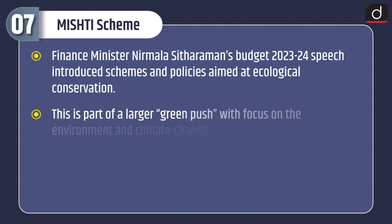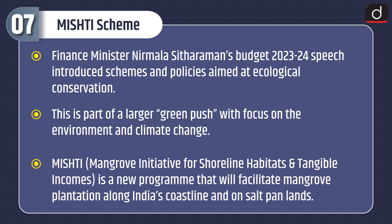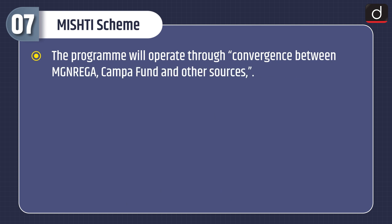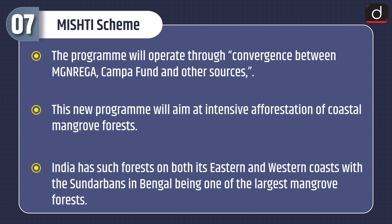Lastly, let's discuss about MISTI scheme. Finance Minister Nirmala Sitharaman's budget 2023-24 speech introduced schemes and policies aimed at ecological conservation, as part of a larger green push with focus on the environment and climate change. MISTI, i.e. Mangrove Initiative for Shoreline Habitats and Tangible Incomes, is a new program that will facilitate mangrove plantation along India's coastline and on salt-pan lands. The program will operate through convergence between MGNREGA, CAMPA Fund and other sources, aiming at intensive afforestation of coastal mangrove forests. India has such forests on both its eastern and western coasts, with the Sundarbans in Bengal being one of the largest.